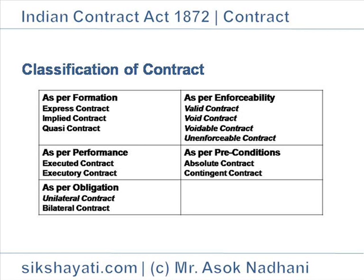As per Obligation. Unilateral Contract: a contract in which one party has performed his obligation while the other party has yet to perform. An unilateral contract is a one-sided contract in which only one party has performed his obligation. In such contracts, a promise on one side is exchanged for an act on the other side.